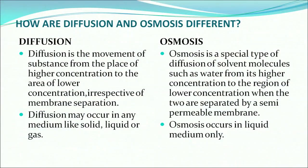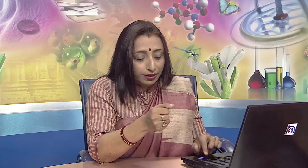So how is diffusion different from osmosis? Diffusion is the movement of a substance from a place of higher concentration to lower concentration, and osmosis is also a movement of water. But diffusion can take place in any medium — solids, liquids and gases — whereas osmosis occurs only in a liquid medium. Another point of difference is that osmosis requires a semi-permeable membrane to occur.